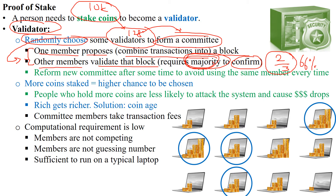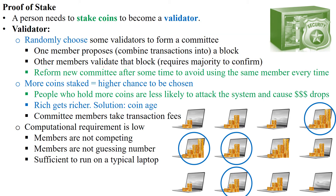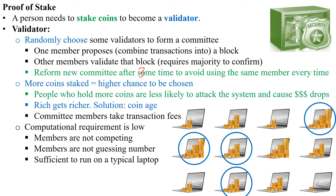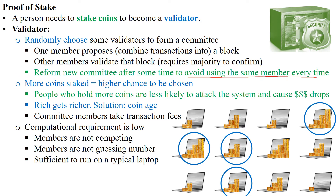A new committee will be reformed after some time — for example, after 32 rounds of combine-and-confirm cycles, a new committee will be formed. This avoids using the same members every time, and a new selection is made again from the 10,000 stakers.